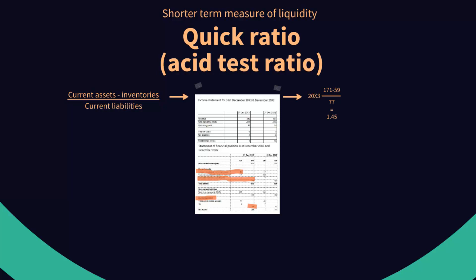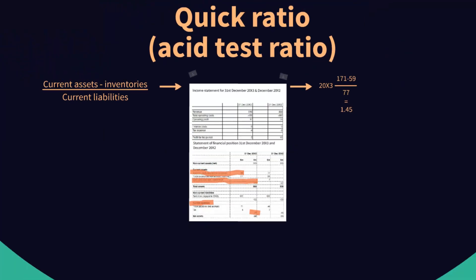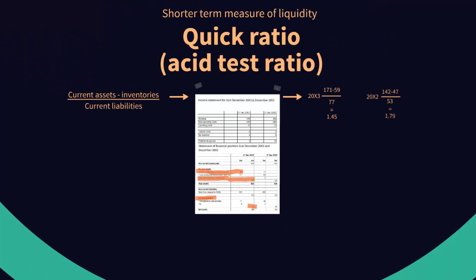Although unfortunately, the same position is prevalent here again. In the previous year, we had total assets of £142 million, inventory of £47 million, and current liabilities of £53 million, giving us a quick ratio for 200X2 of 1.79. So again, the quick ratio has worsened over the year. Both ratios have worsened.